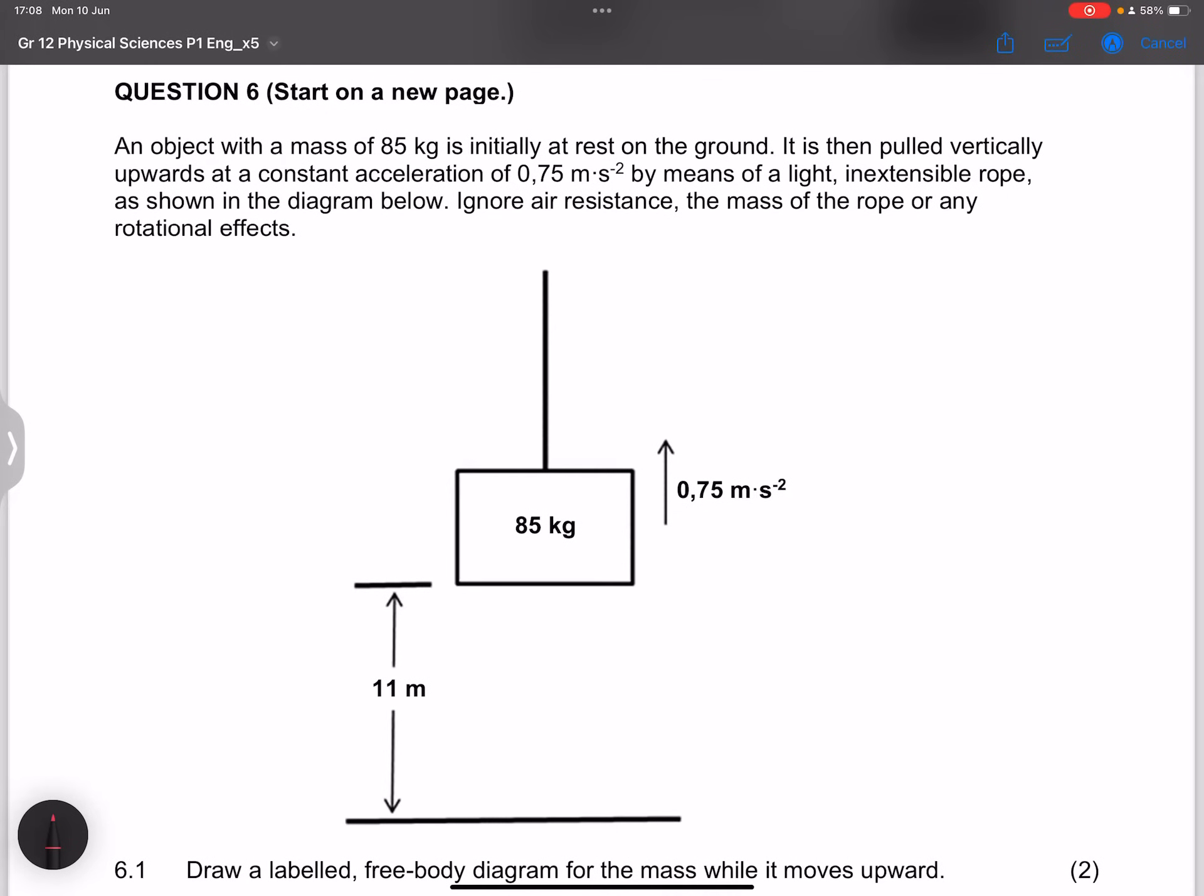Question 6. They say an object with a mass of 85 kilograms is initially at rest on the ground. It is then pulled vertically upwards at a constant acceleration of 0.75 meters per second squared. All of those things I would actually highlight.